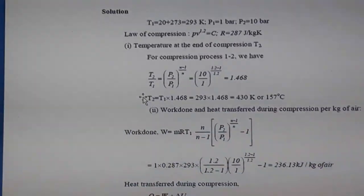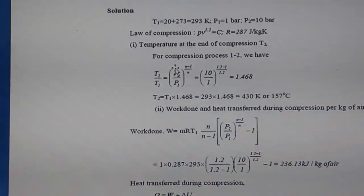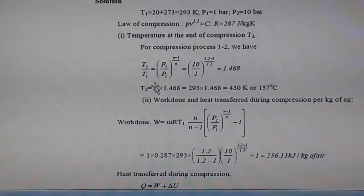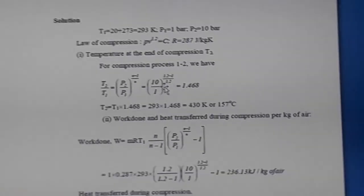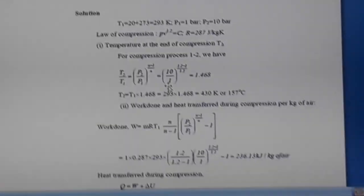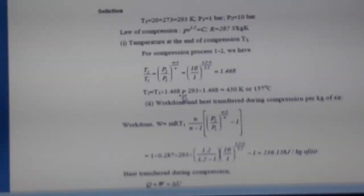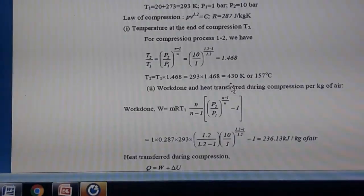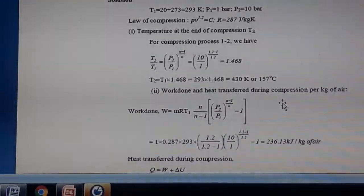To find temperature T2, use T2/T1 = (p2/p1)^((n−1)/n). With T1 = 293 K, p2/p1 = 10/1, and n = 1.2, we get T2 = 430 K, or 157°C.